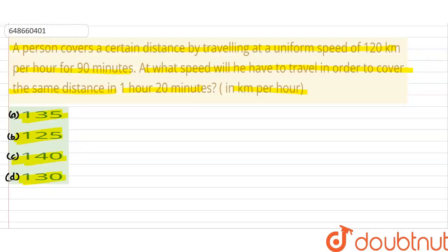So first of all, we know the distance formula, which is speed into time. We use this formula to find distance. Distance will be speed—speed is 120 km per hour—into time.